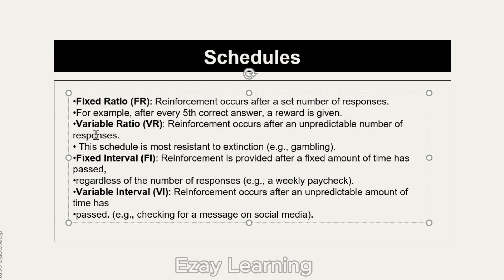Variable ratio (VR) means reinforcement is given after an unpredictable number of responses. This schedule is the most resistant to extinction — a commonly tested MCQ point — because the reward is given after a varying, unpredictable number of responses.